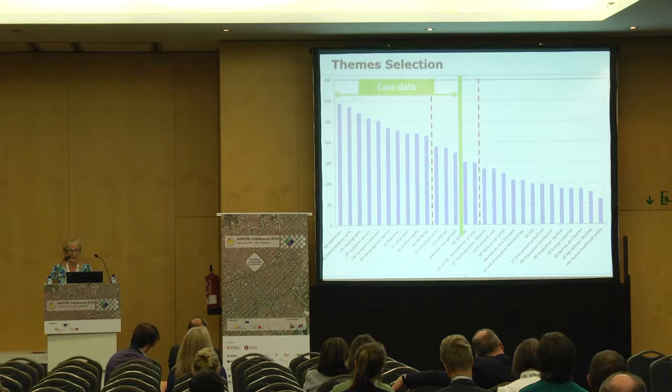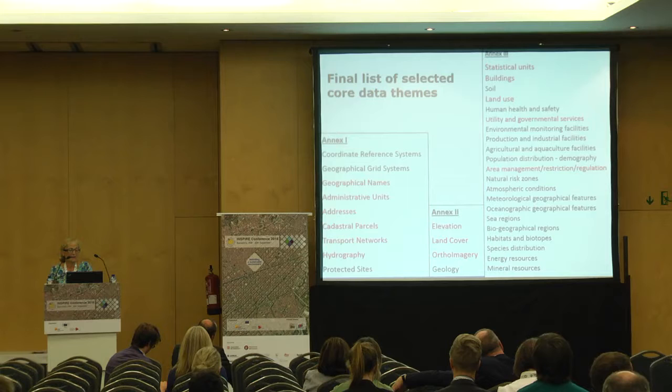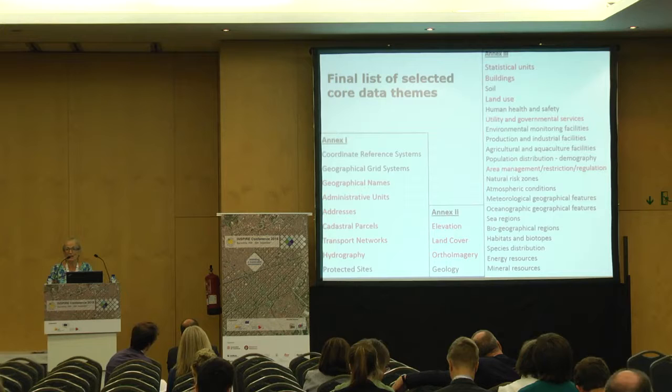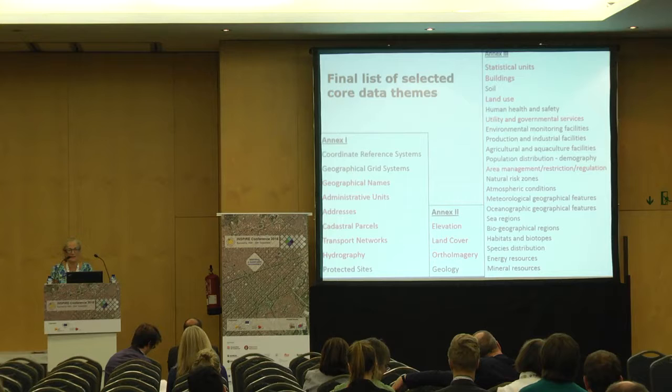Here is the final list of core data themes. We have geographical names, administrative units, addresses, cadastral parcels, transport networks, hydrography, elevation, land cover, orthoimagery, statistical units, buildings, land use, utility and governmental services, and area management restriction regulation zones. In total we have 14 themes — almost 15 — because we consider protected sites as a specific case of area management.